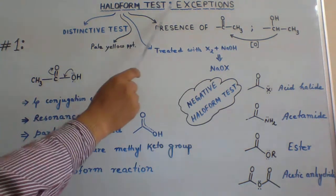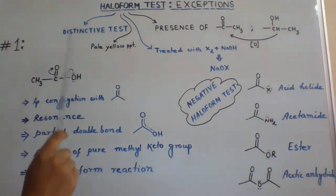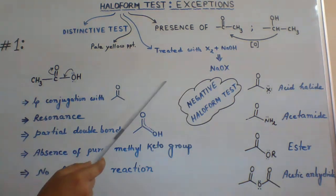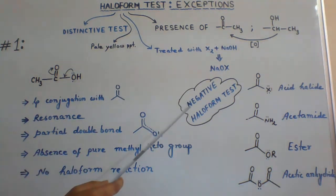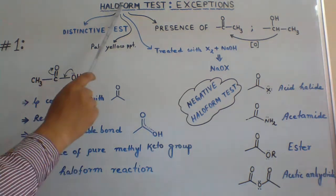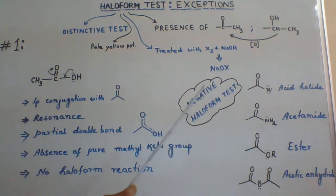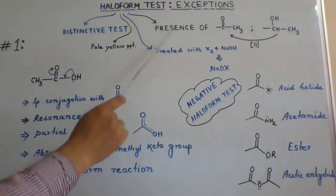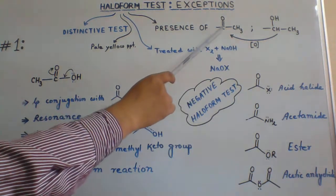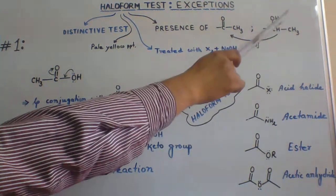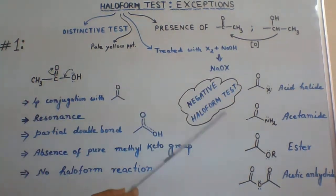Haloform test is a distinctive test between alcohols, ketones, aldehydes, or amongst them. Haloform test is shown by those compounds where there is a presence of methylketo group or alcoholic group which is oxidizable to methylketones.